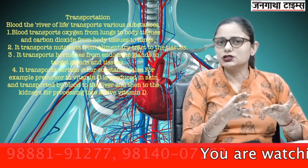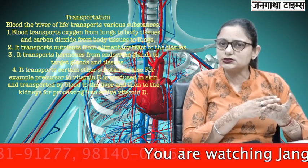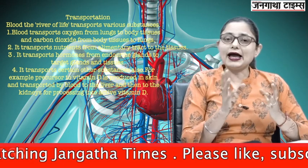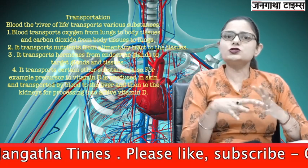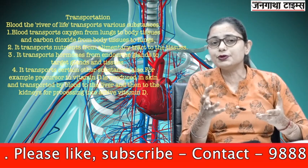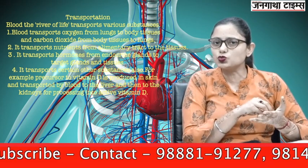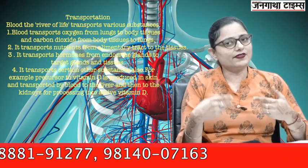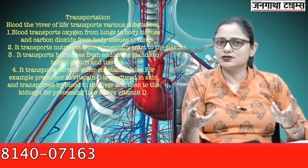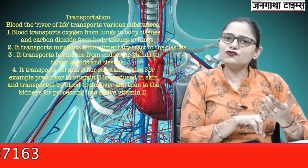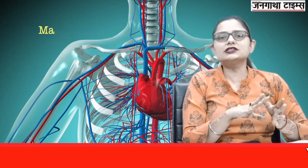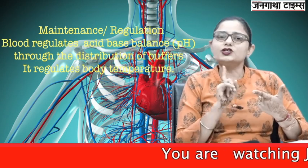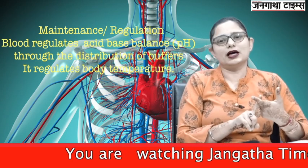The excretory organs are the lungs, the kidneys, and the skin. Blood also transports other substances — for example, it transports the precursor to vitamin D from the skin to the liver and then to the kidneys. The second function of blood is maintenance and regulation. It regulates the acid-base balance.